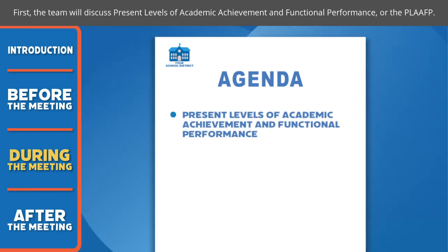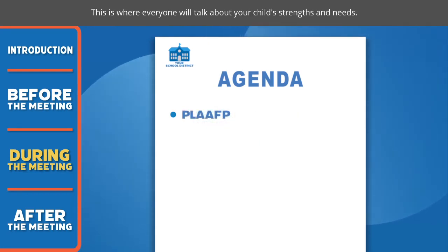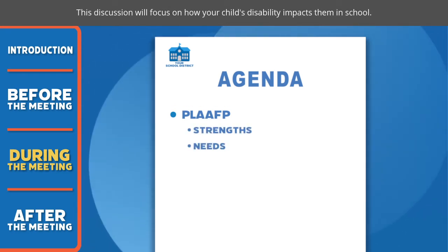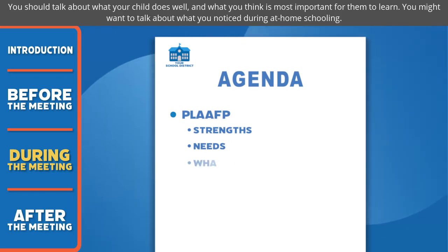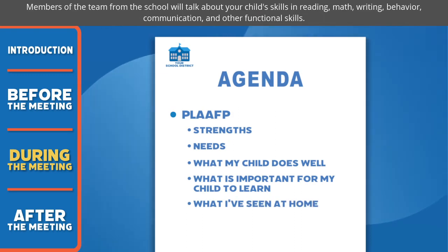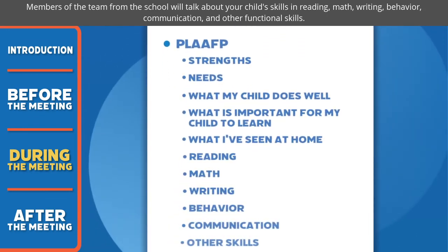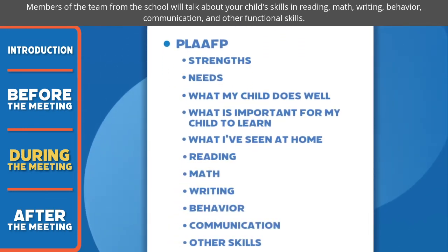First, the team will discuss present levels of academic achievement and functional performance, or PLAFP. This is where everyone will talk about your child's strengths and needs, focusing on how your child's disability impacts them in school. You should talk about what your child does well and what you think is most important for them to learn, and you might want to mention what you notice during at-home schooling. Members of the team from the school will talk about your child's skills in reading, math, writing, behavior, communication, and other functional skills.